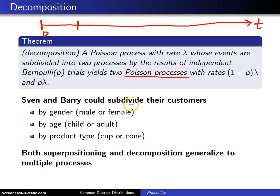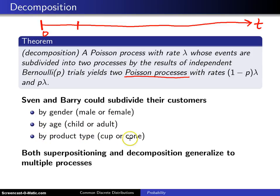Sven and Barry could subdivide their customers by gender — male or female — by age, maybe child or adult, or by the product type they purchase, which is a cup or cone. That is a way that this can be applied.